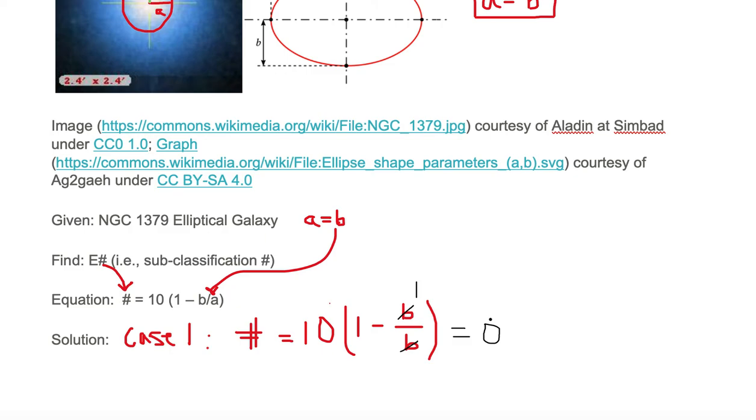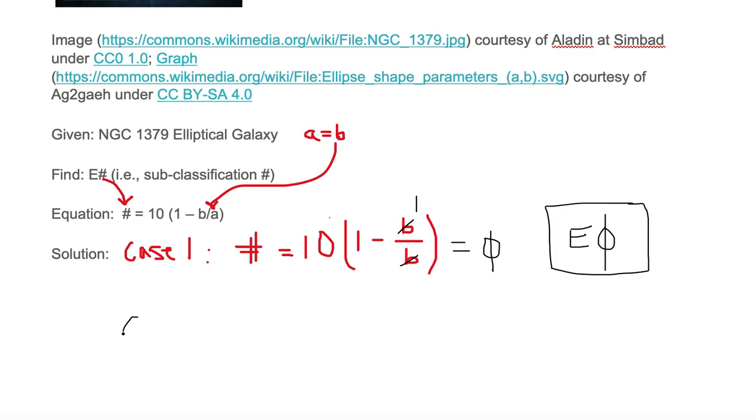So our number is equal to 0. So our final answer is E with the number, in this case it is 0. Our galaxy subclassification is 0. E is the classification for elliptical. So the galaxy is an E0. Now let's go look at case 2.